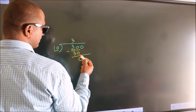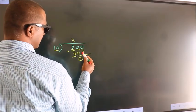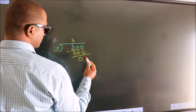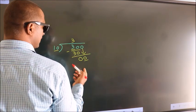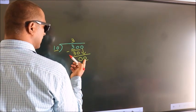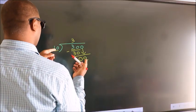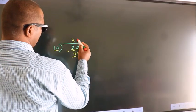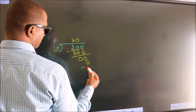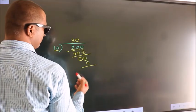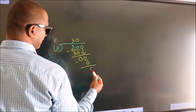After this, bring down the beside number. So 0 down. So 0. When do we get 0? In the 10 table. 10 zeros, 0. Now we subtract. We get 0.